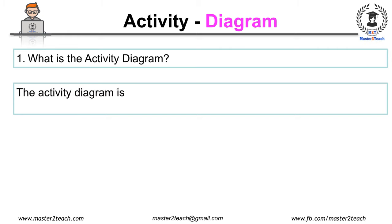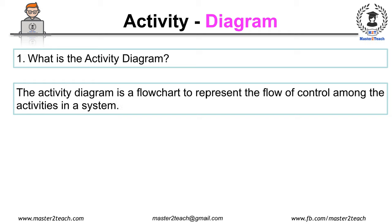The activity diagram is a flowchart to represent the flow of control among the activities in the system. Simply, it's an operation of the system shown in diagrammatical form where it shows all the control flow from one operation to another.